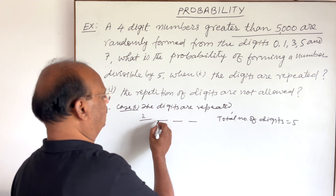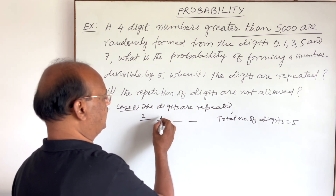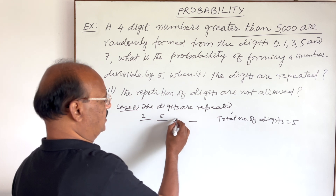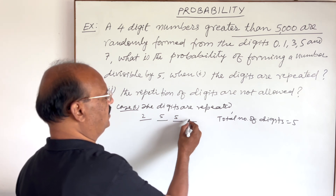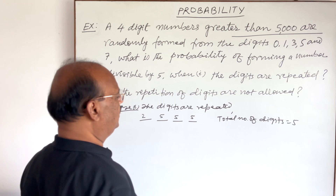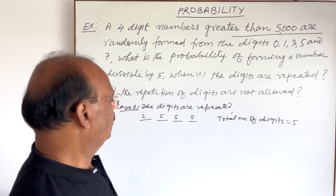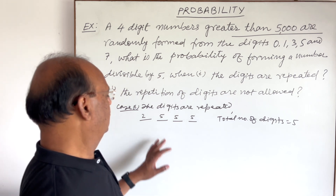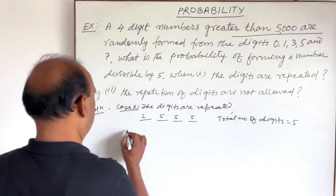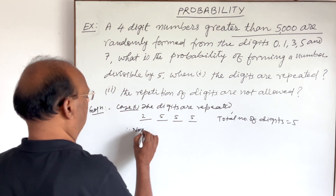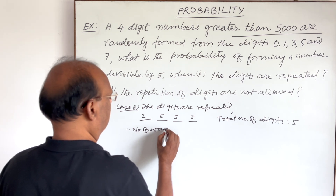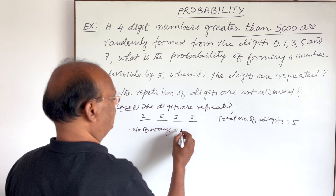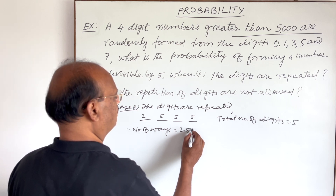Since digits can be repeated and the total number of digits is five, the hundreds place can be filled in five ways, the tens place can also be filled in five ways, and the units place can also be filled in five ways. So the total is 2 × 5 × 5 × 5 = 250. Therefore, the total number of possible numbers is 250.